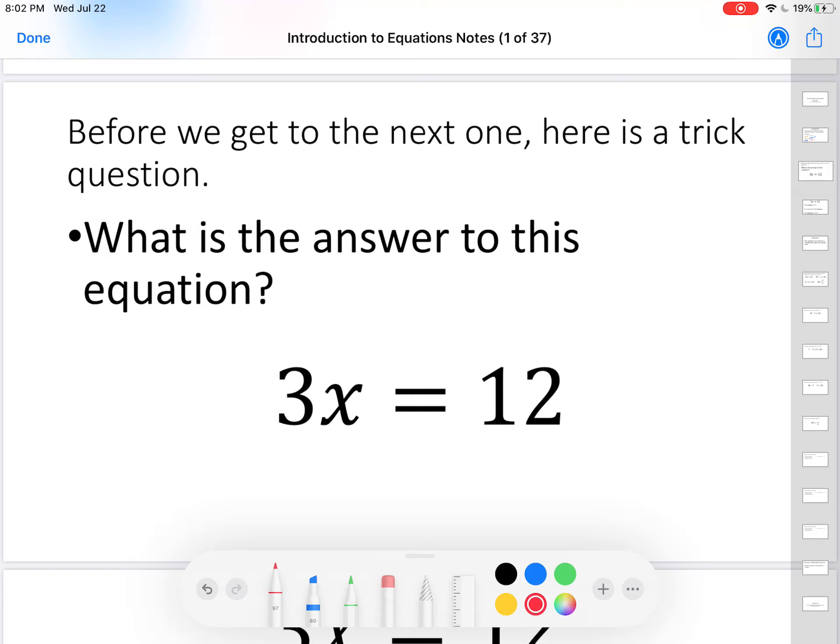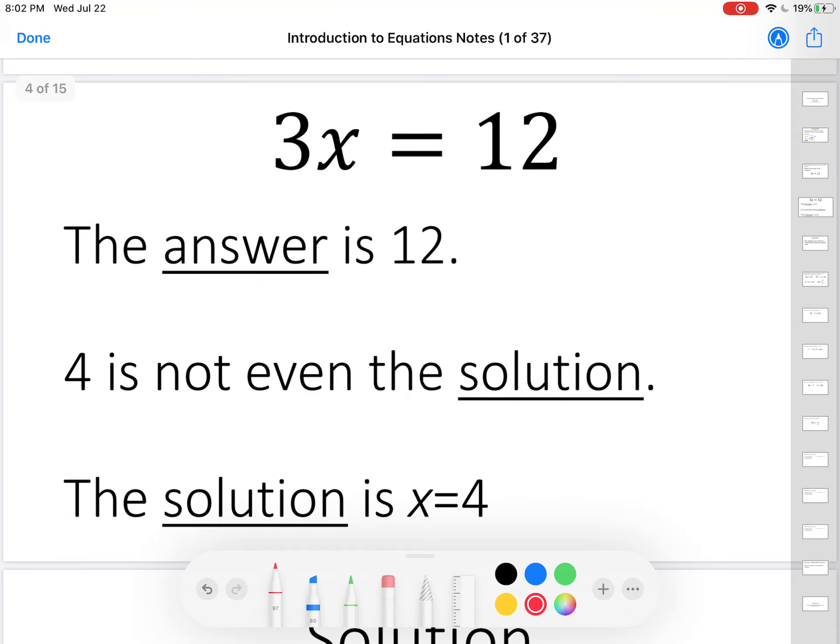So, you think to yourself, 3 times x equals 12. What's the answer? Did you get 4? Well, that's the trick. It's not 4. The answer is 12. It says so right there. What does 3x equal? 3x equals 12.